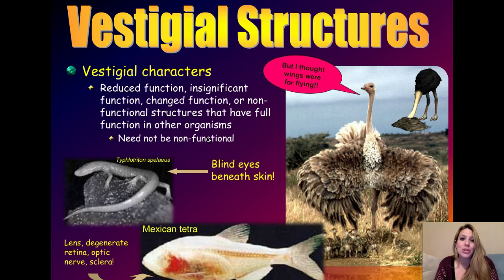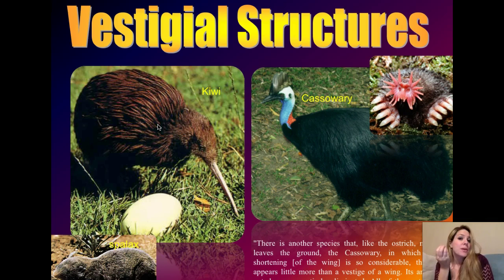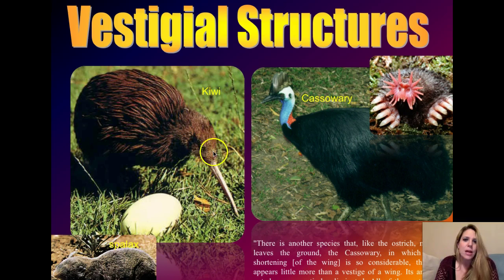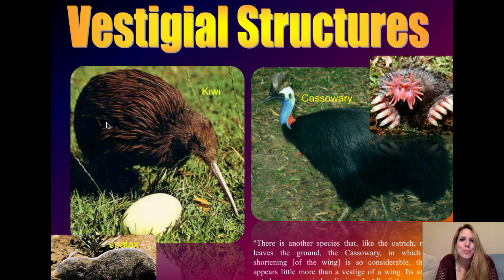It need not be that vestigial structures are non-functional — they just have an altered or reduced function compared to the ancestor. Kiwi birds are one of the only birds that can smell; most other birds have traded smell for really good eyesight. Kiwis are active at night, so they don't have very good eyesight, but they have very good noses to stick their beaks into the ground and smell grubs. His wings are completely vestigial — he has lost his ability to fly because he forages on the ground, so he just has these little itty-bitty wings that no longer serve the function they did in his flightable ancestral species.